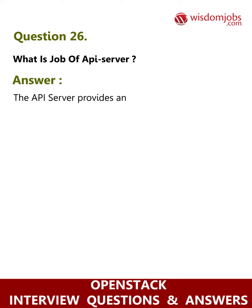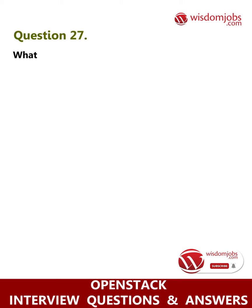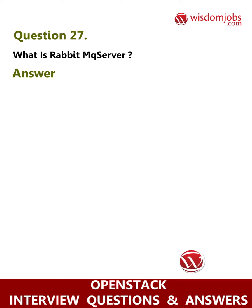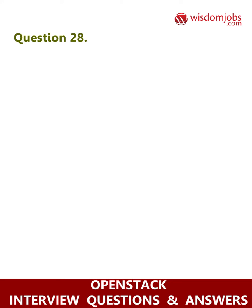Question 26: What is the job of the API server? Answer: The API server provides an interface for the outside world to interact with the cloud infrastructure. Question 27: What is the RabbitMQ server? Answer: OpenStack components communicate among themselves using the message queue via AMQP.